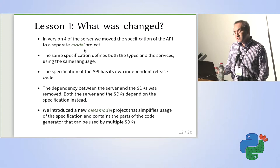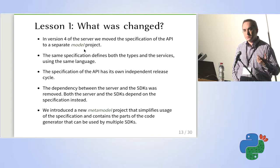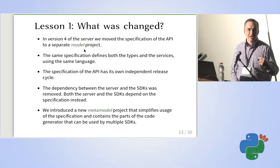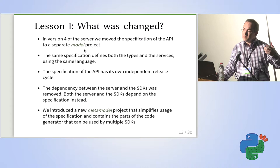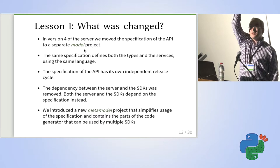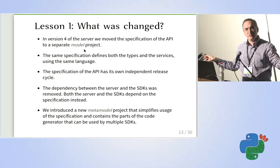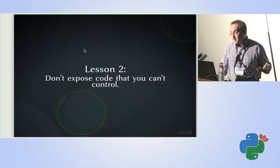In order to improve that, with the release of version 4 of oVirt we changed the architecture of the SDK. We introduced a new separate specification of the API — a formal specification in a single place with a single language defining both the types and operations of the API. This makes it possible to have its own release cycle, independent of the server. Now the server and the SDKs do not depend on each other — they both depend on the specification.